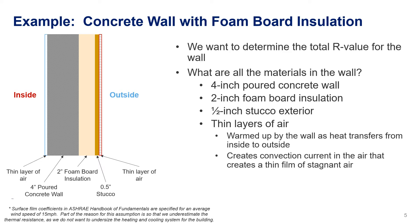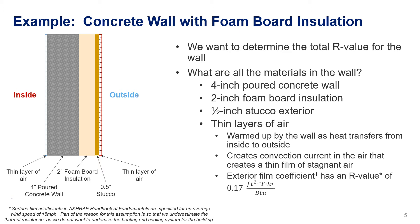Another factor that plays a part is wind. When wind hits that wall, it moves the air away from it and reduces the amount of resistance we have. So experimentally, it has been determined that the thermal resistance value on the outside for most normal applications is 0.17 square feet, degrees Fahrenheit, hour per BTU. This is called the exterior surface film coefficient, or exterior film coefficient for short.